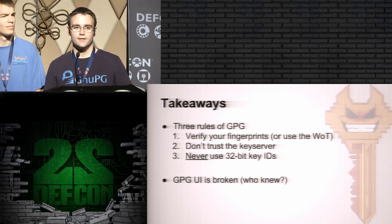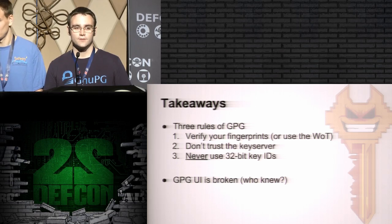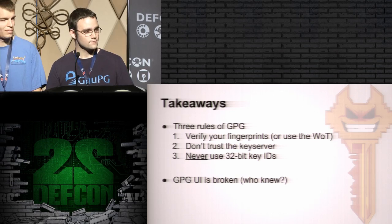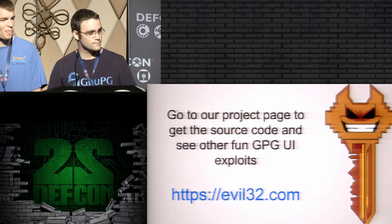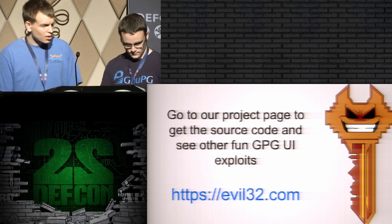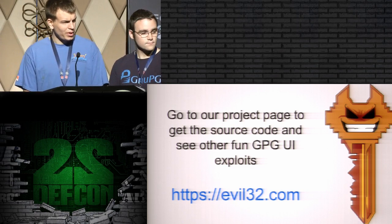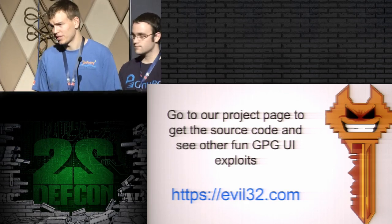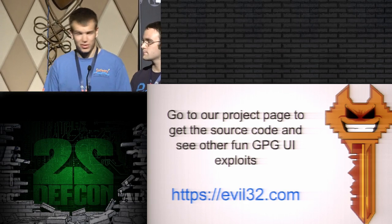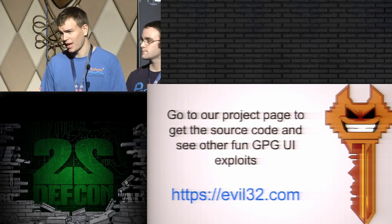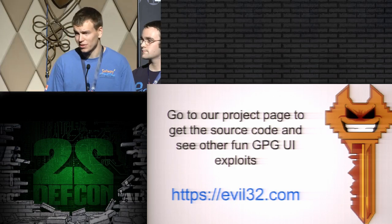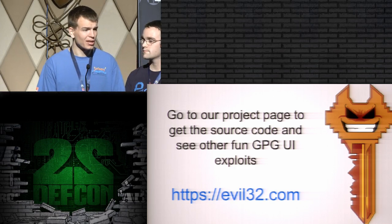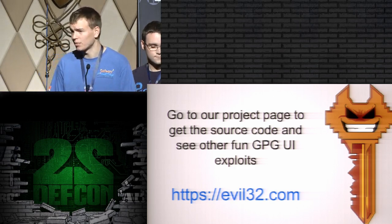For the people who need to fix the problem, GPG's UI is broken in a couple of ways. First, it shouldn't accept 32-bit key IDs anymore and shouldn't display them by default. There is a format option you can put in your config to make it show 64-bit IDs by default, but it will still accept 32-bit IDs and still show you keys that collide. Second, if there are key collisions, GPG should give you a warning if you ask for a key by fingerprint or by ID and get a collision. You can find more information, source code, and access to the key server at evil32.com.